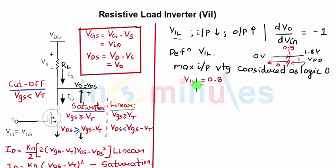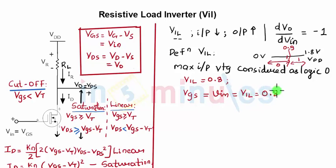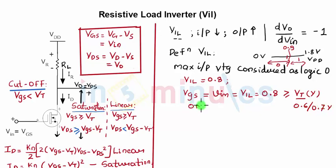Now let's understand the region of operation for my NMOS transistor, because we want to equate the transistor current to the current flowing across the resistor. VIL is 0.8 V, so let's first check whether the transistor is on. VGS equals VIN equals VIL equals 0.8 V, which is greater than VT (which is about 0.6–0.7 V), so the transistor is on.